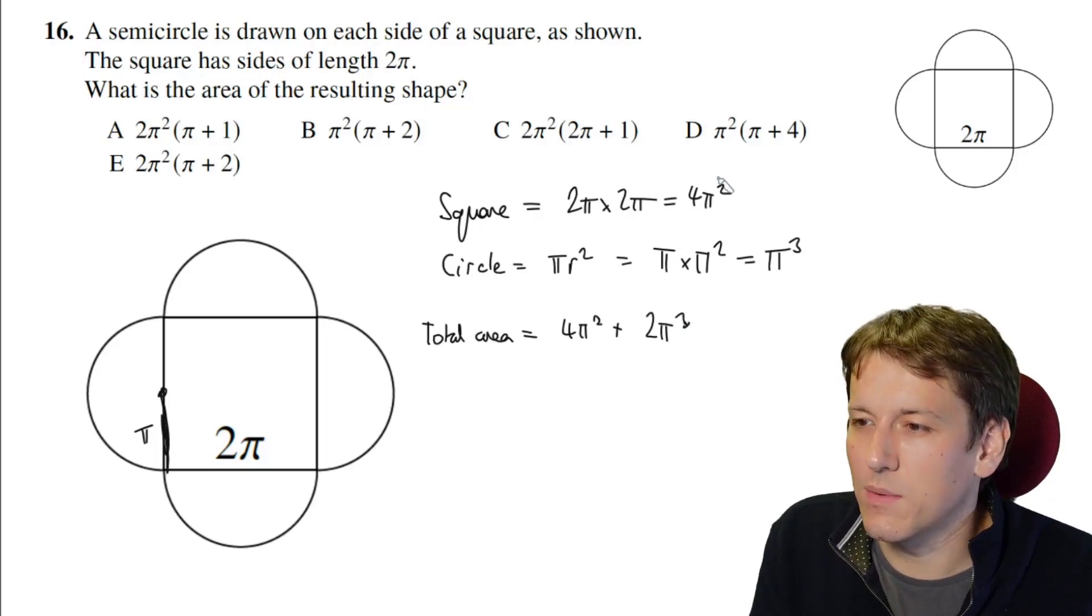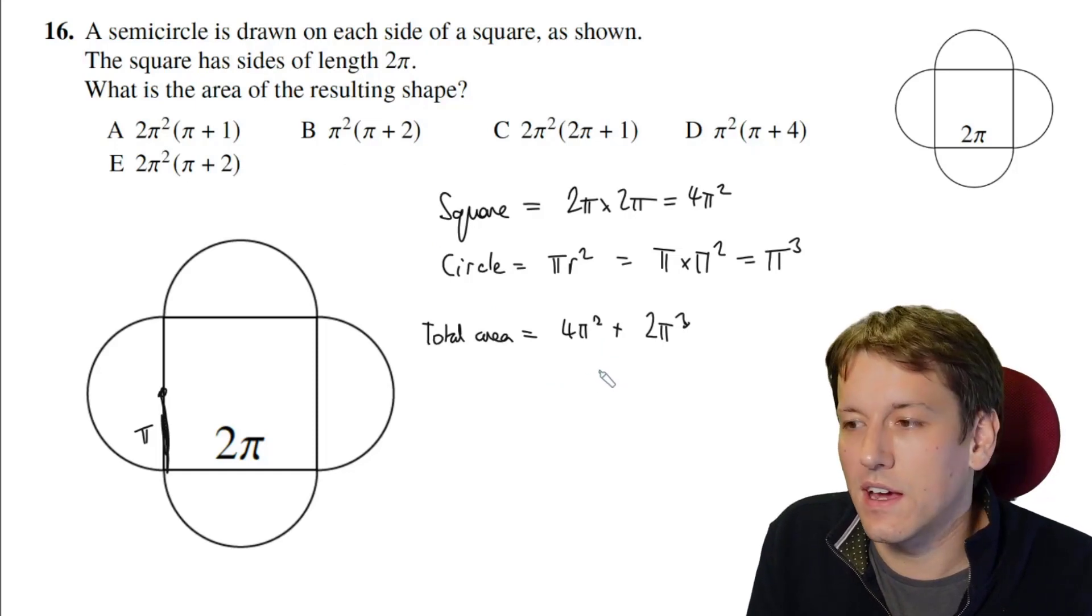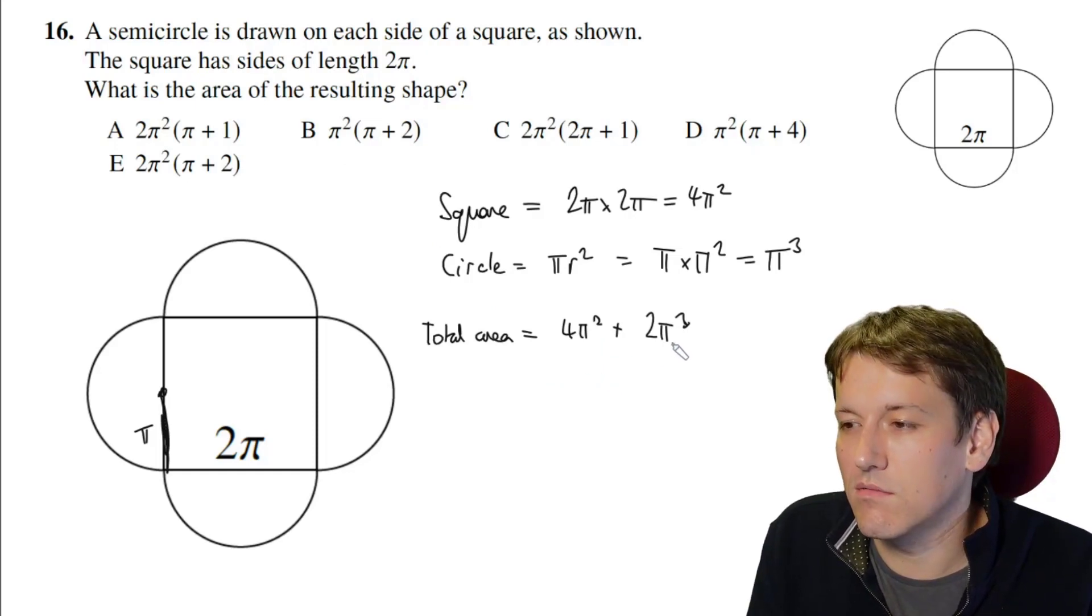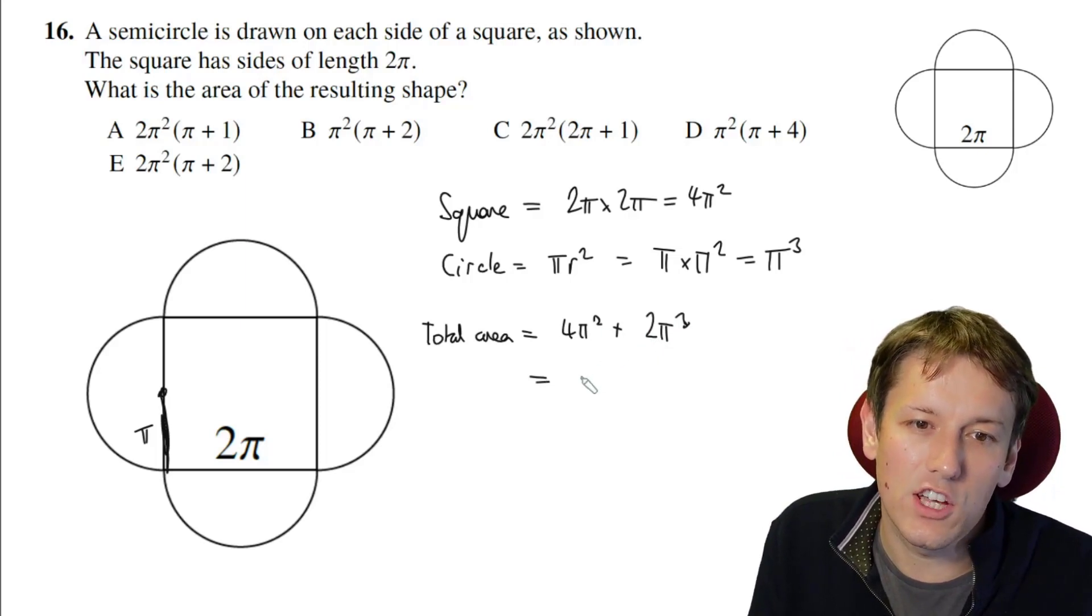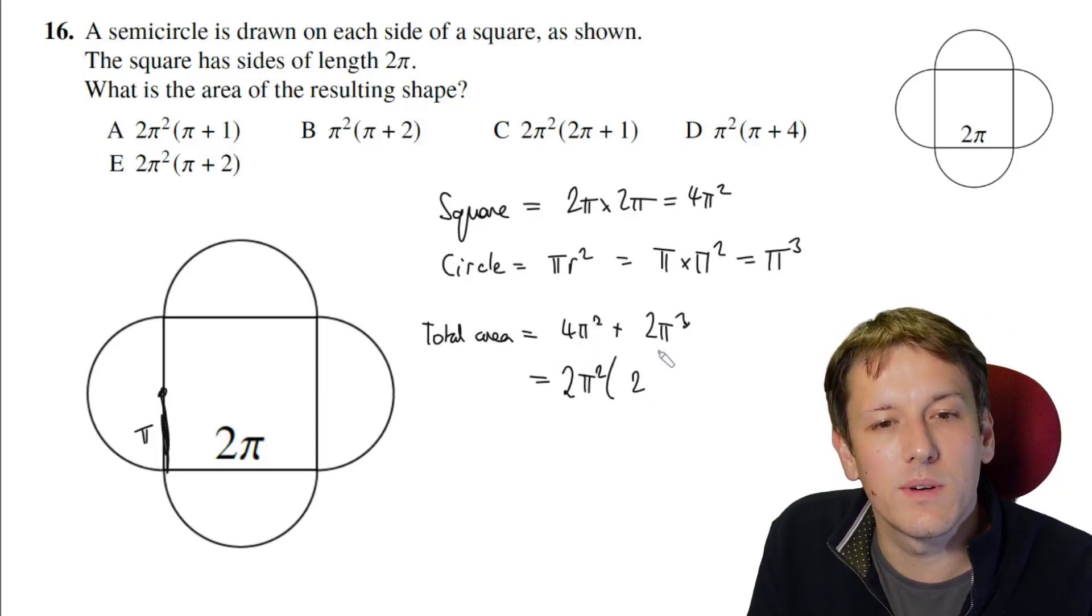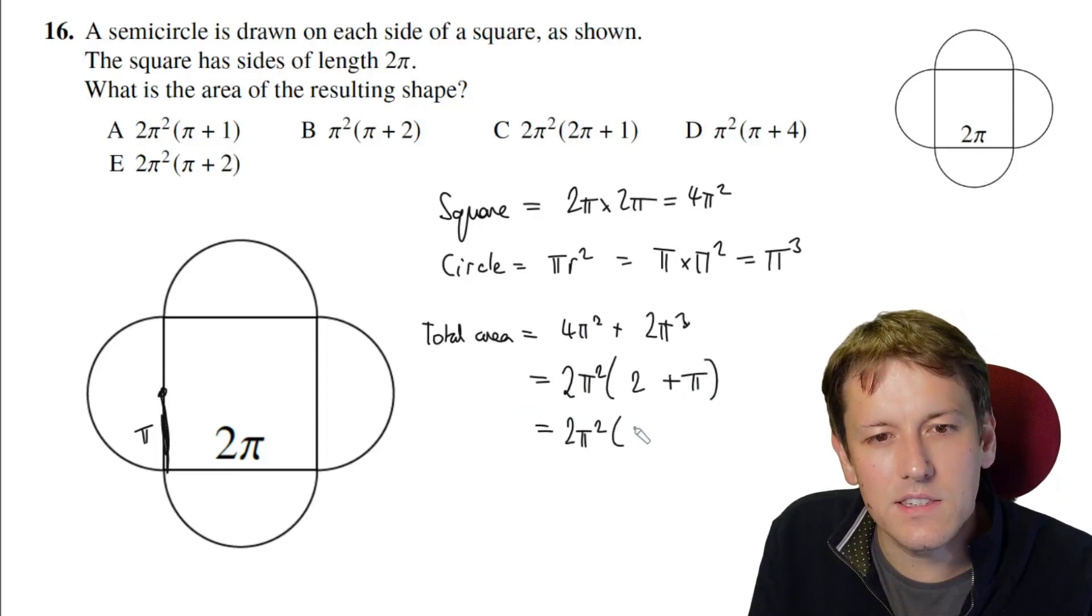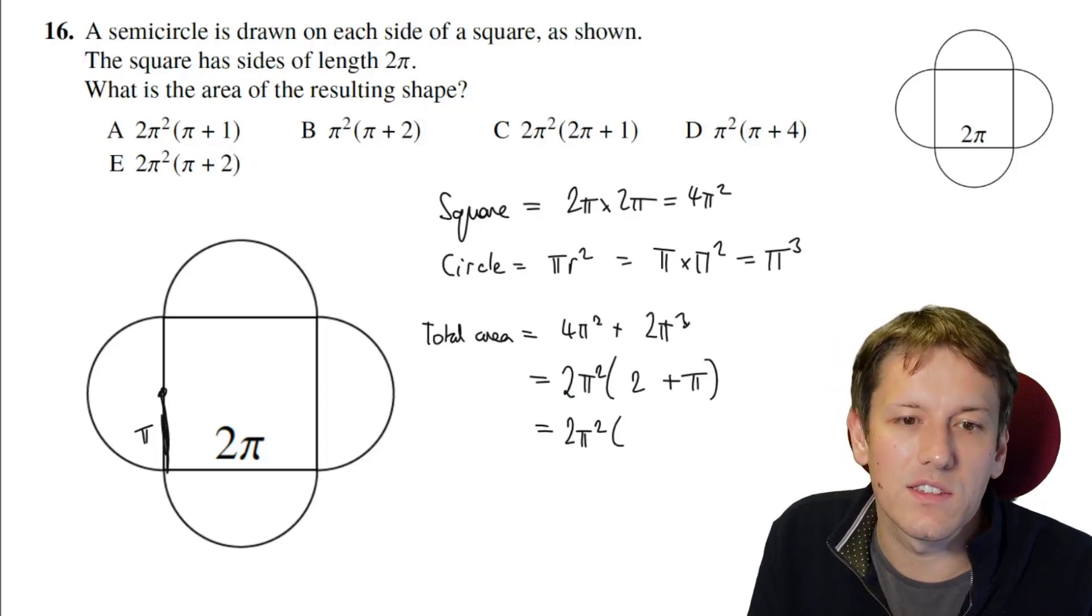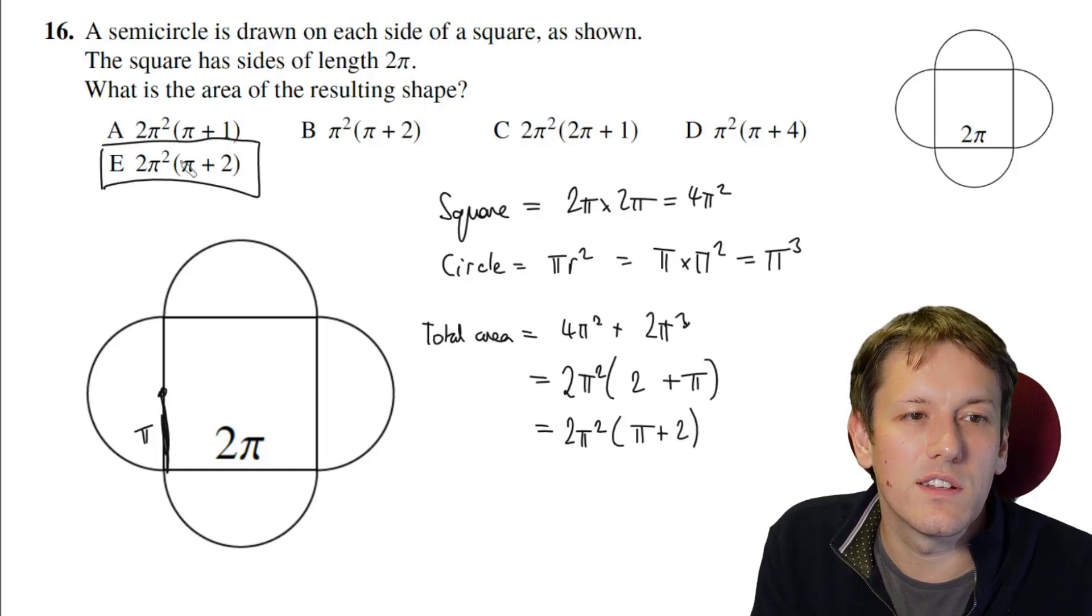Now, to get the final answer here, we can see they've just factorized them. So factorizing here is just the same as with π here as if it was with x. To get the final answer, so I can see a common factor of π² and there's a common factor of 2. 2π² times 2 would be 4π² and 2π² times π would give us 2π³. So that's 2π²(2 + π) and that's the same thing here as 2π²(π + 2), which is the answer E.